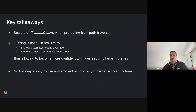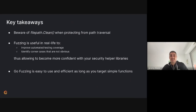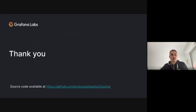To wrap up: you've been warned that filepath.Clean can be tricky when protecting from path traversal. I hope you're convinced that fuzzing can be useful in real life — it improves your automatic testing coverage, enables you to identify corner cases that would not be obvious, and makes you more confident with your security helper libraries. Go fuzzing is easy to use, nicely integrated, and can be really efficient as long as you target simple functions. I'd be really happy to take any questions. Thank you.